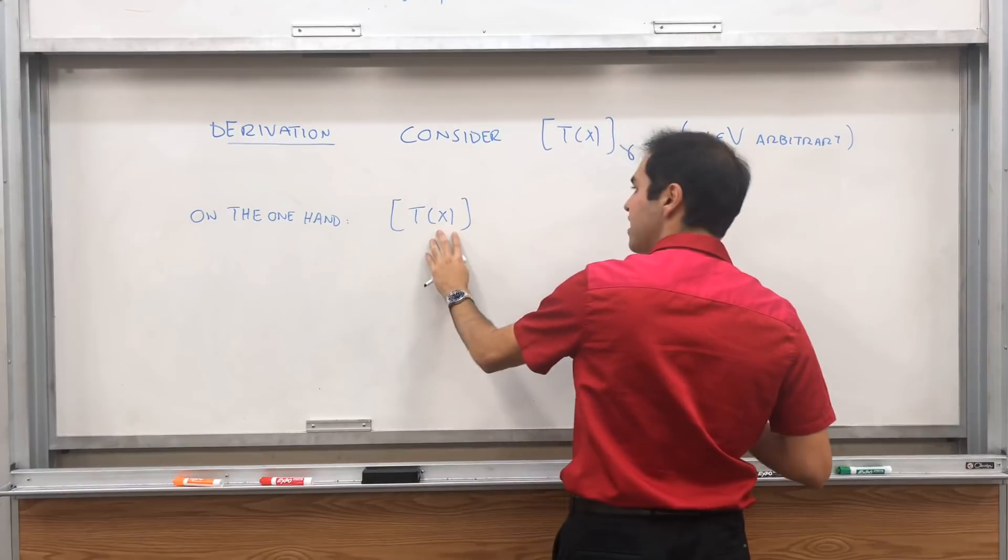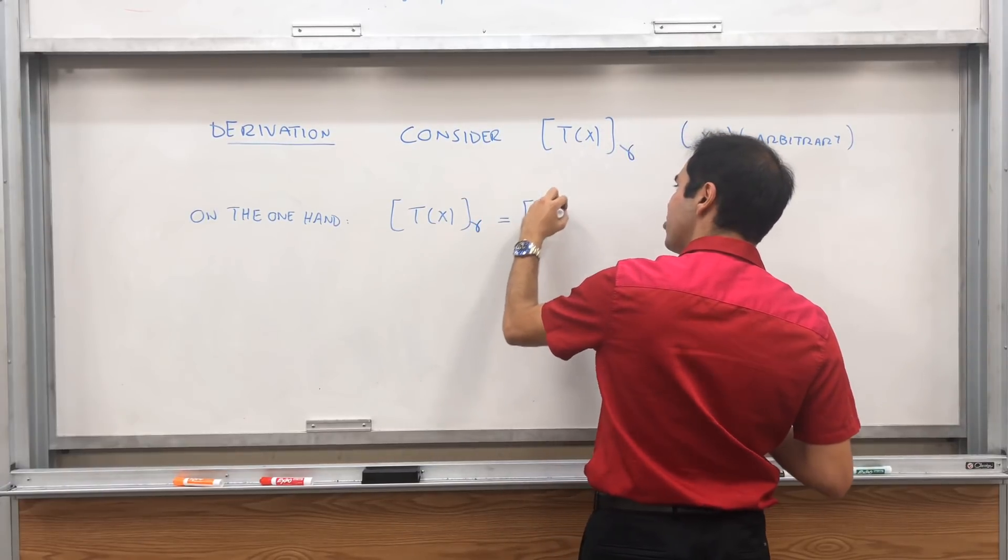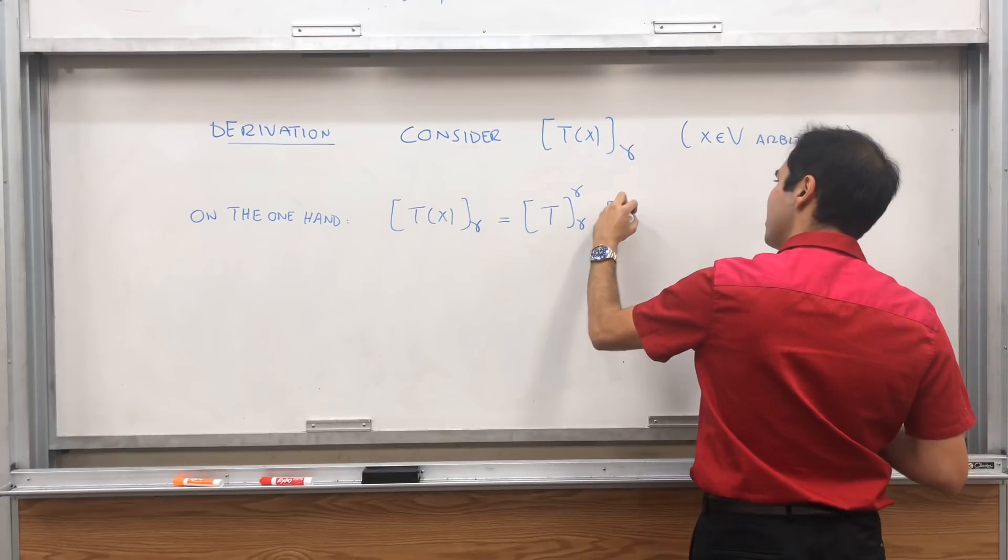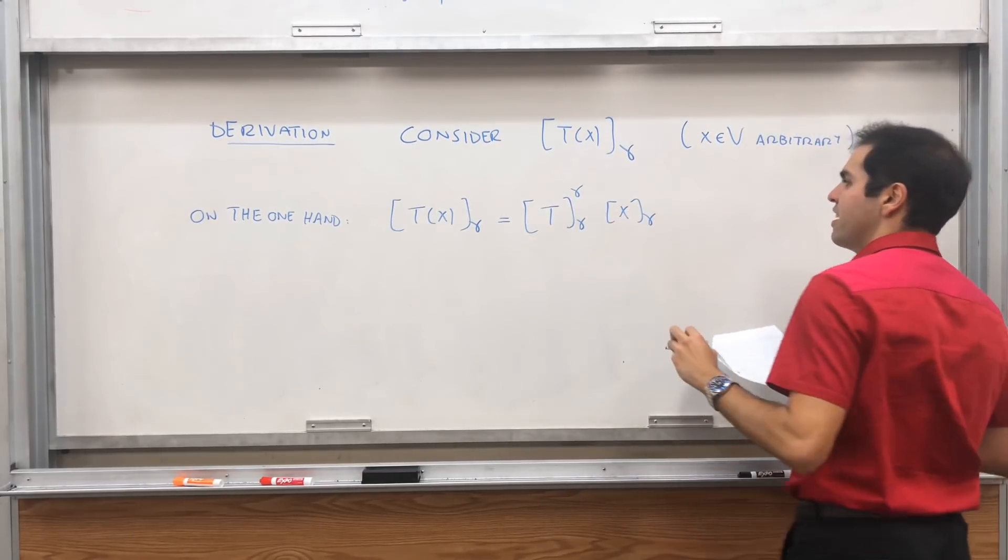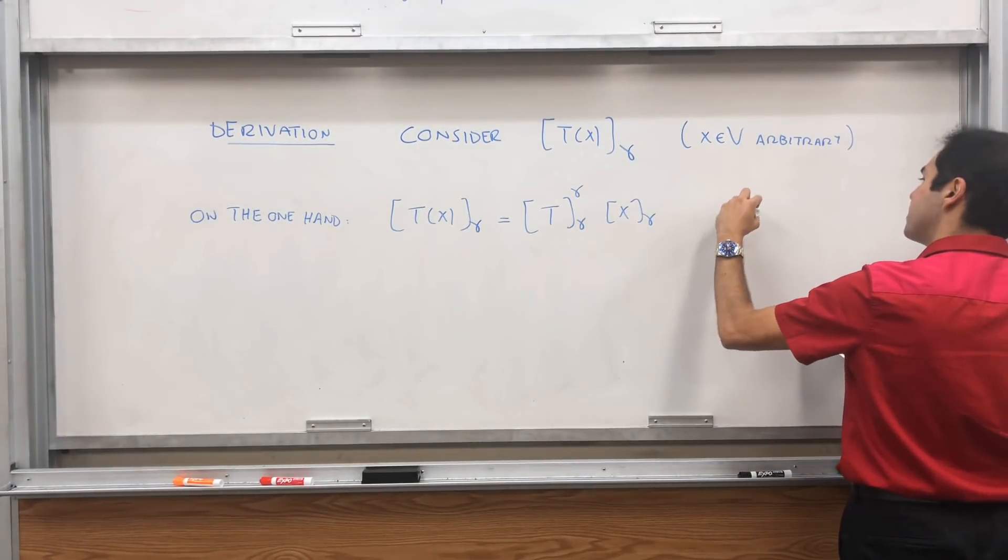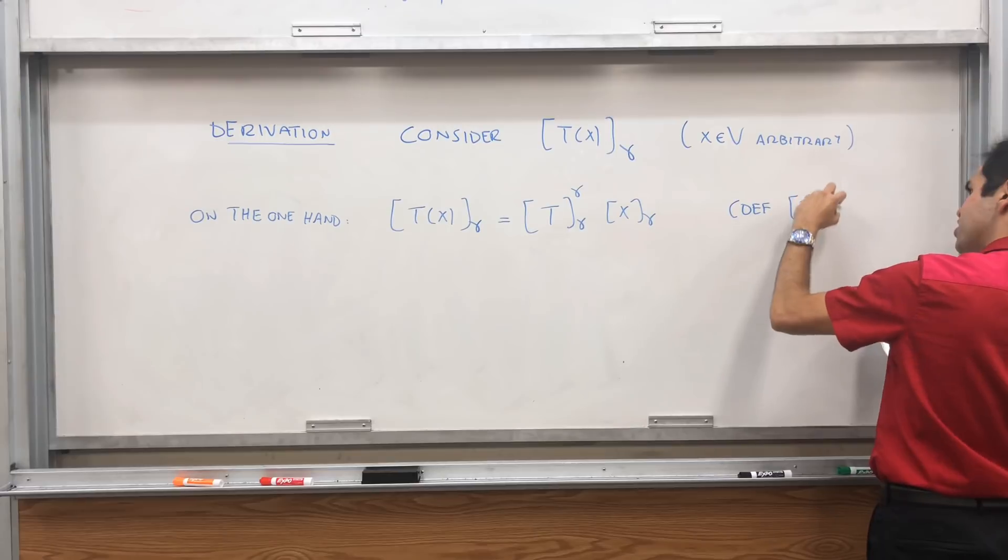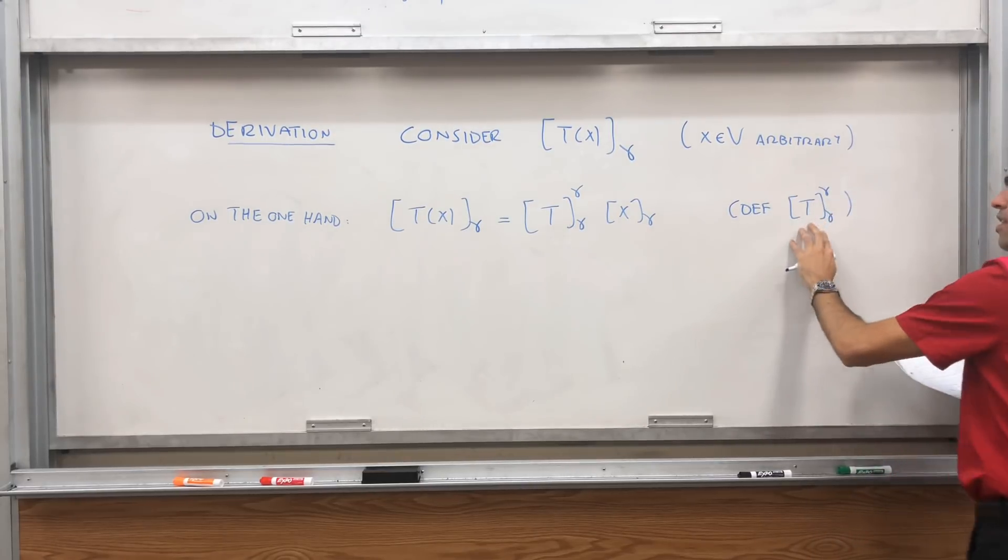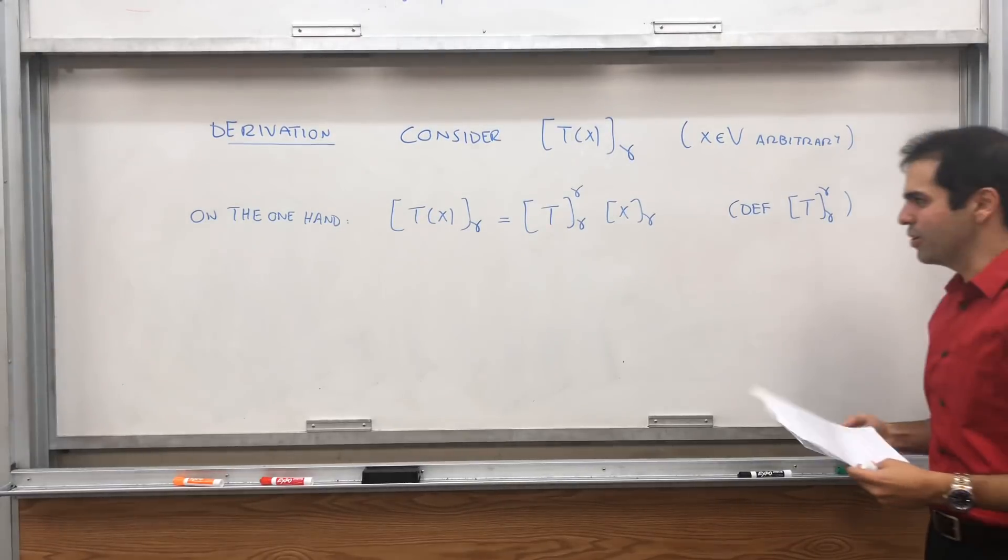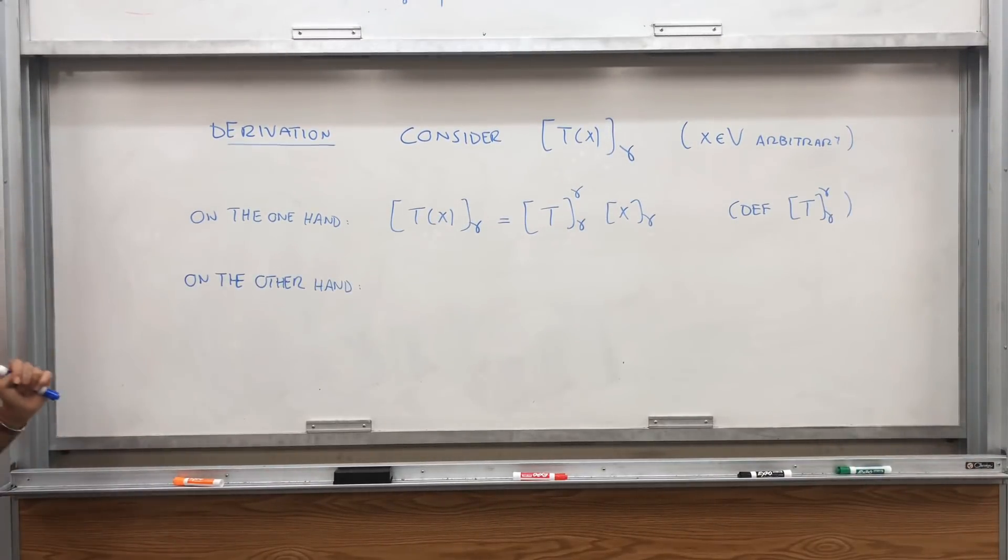If you calculate T of X, this vector, it equals the matrix of T from gamma to gamma times the vector X. This is just the definition. We have the matrix such that precisely this equality holds.